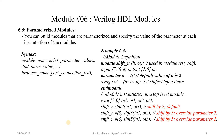Here is an example of a shift operation. We have a module called shift module. If you see here, this is our shift module — we have an input signal and output signal. What we are doing is shifting the input signal and assigning that shifted value to the output.